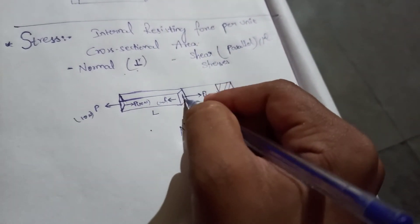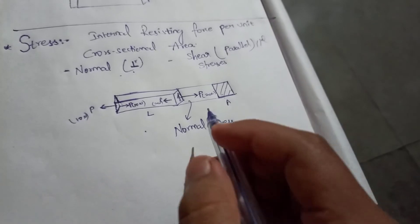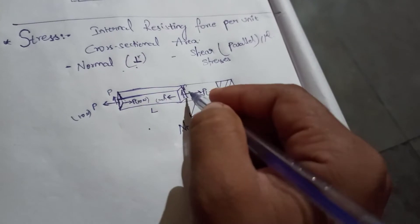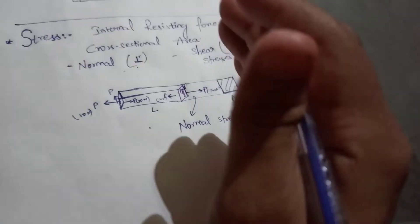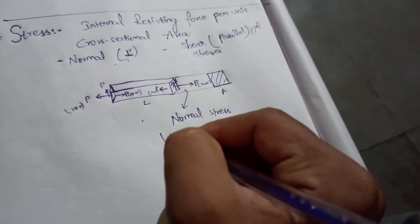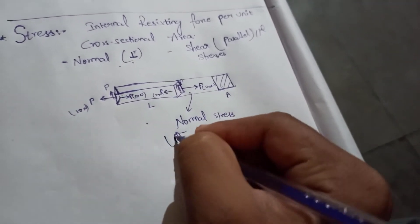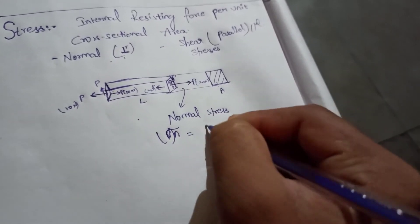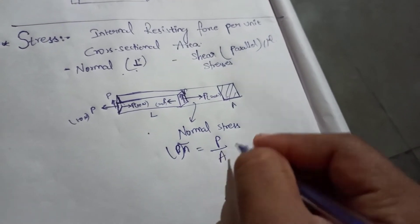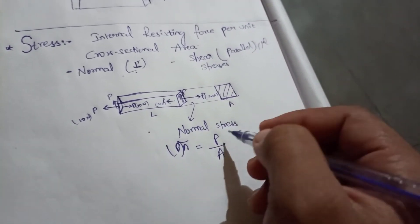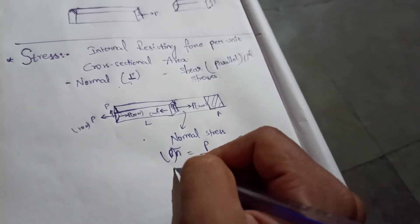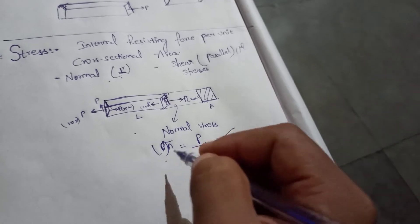Shear stresses act along the structural member, producing a shearing nature. Normal stress sigma (σ) is given as P divided by A — that is, force per unit area, where A is the cross-sectional area. That is the normal stress formula.